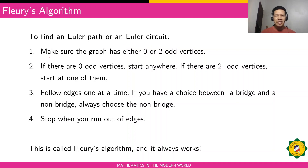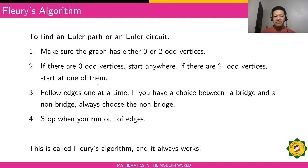Fleury's algorithm: Step 1 — make sure the graph has either zero or two odd vertices. If zero, it's an Euler circuit; if exactly two, it's an Euler path. Step 2 — if zero odd vertices, start at any vertex; if two odd vertices, start at one of the two odd vertices. Step 3 — follow edges one at a time; if you have a choice between a bridge and a non-bridge, always choose the non-bridge. Step 4 — stop when you run out of edges.